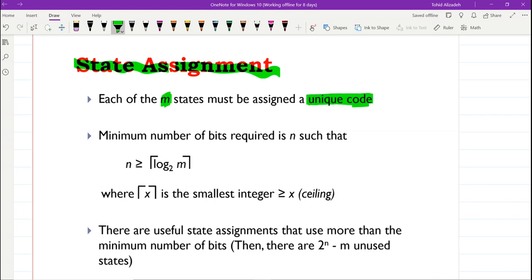We'll assign a unique code to them, and this unique code will be provided using the flip-flops. So the minimum number of the bits, which is indeed flip-flops here, or FFs, which is required in order to assign a unique code to each one of those m states is n.